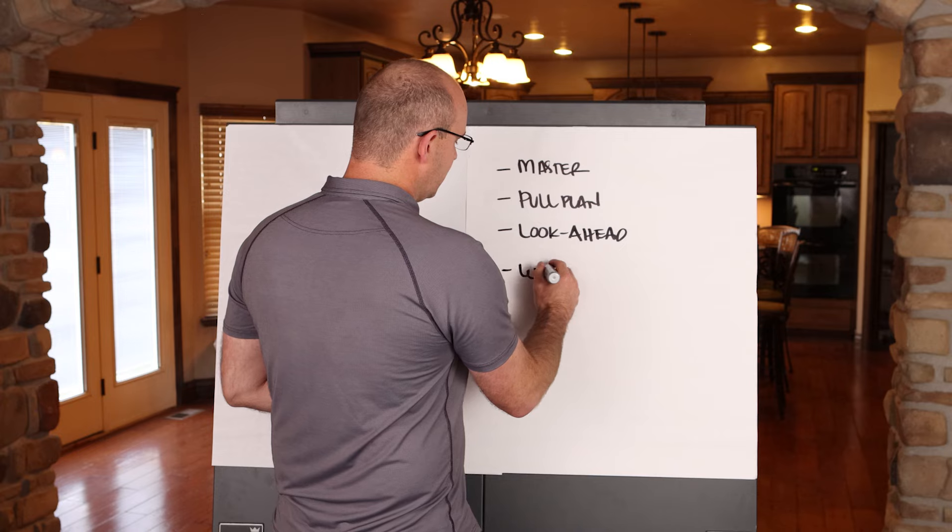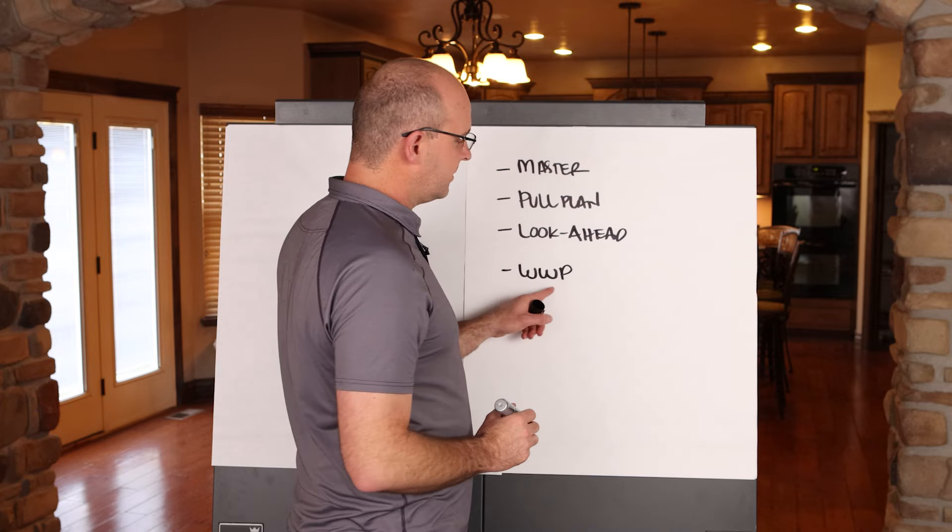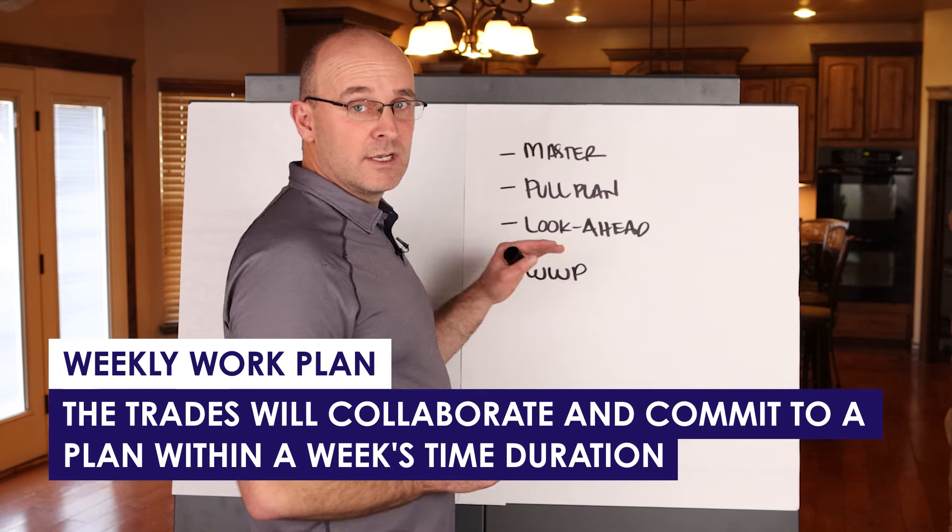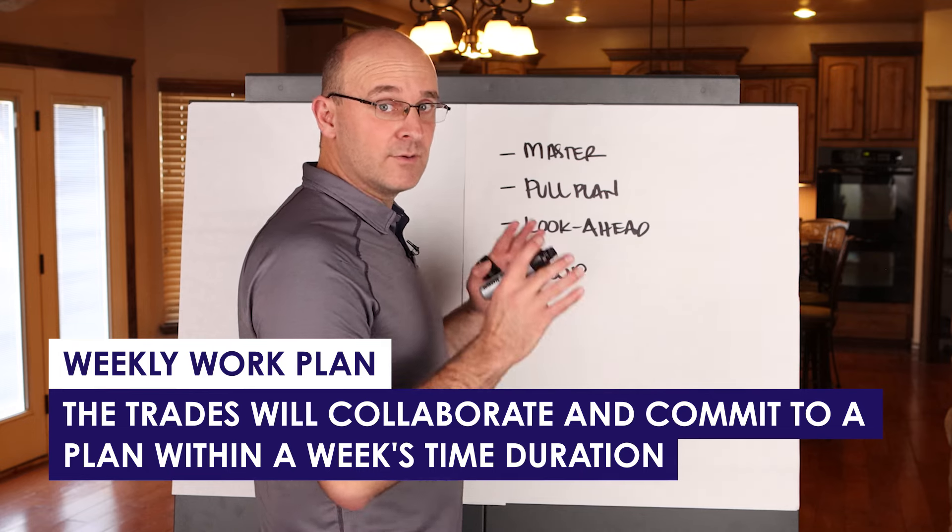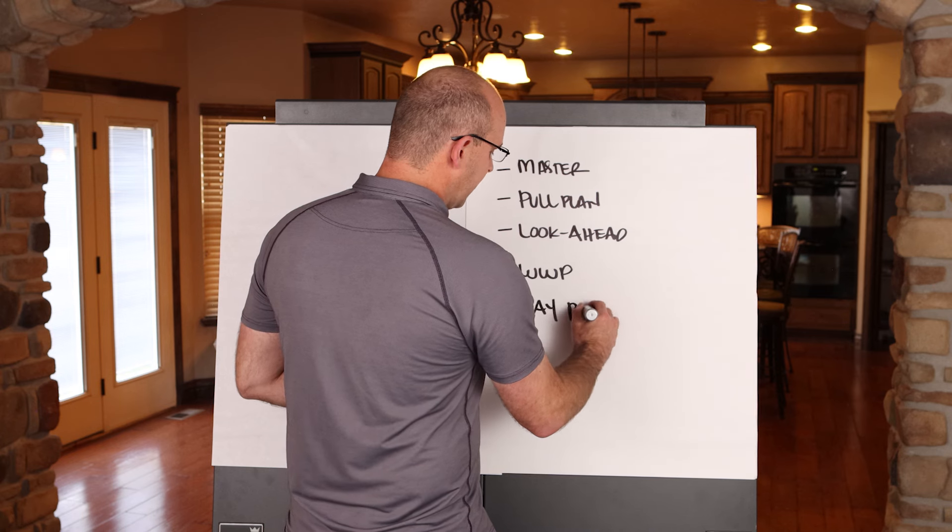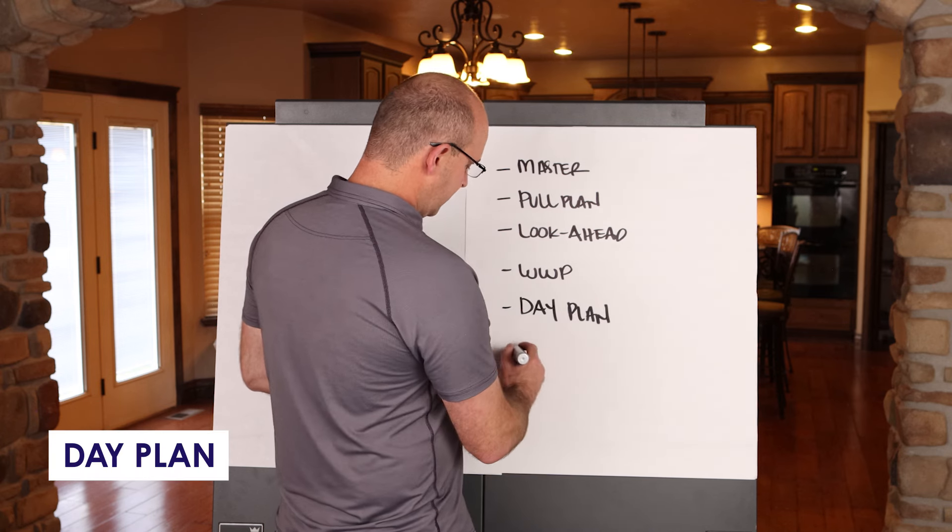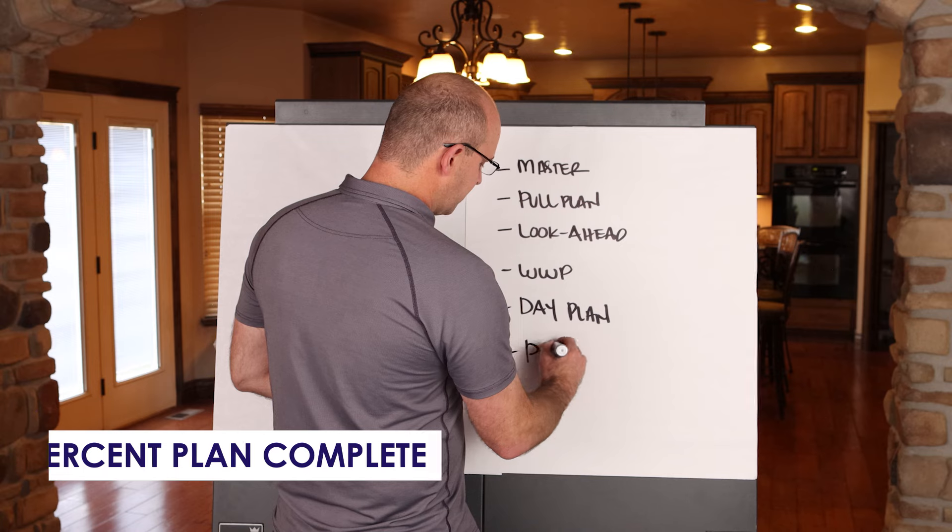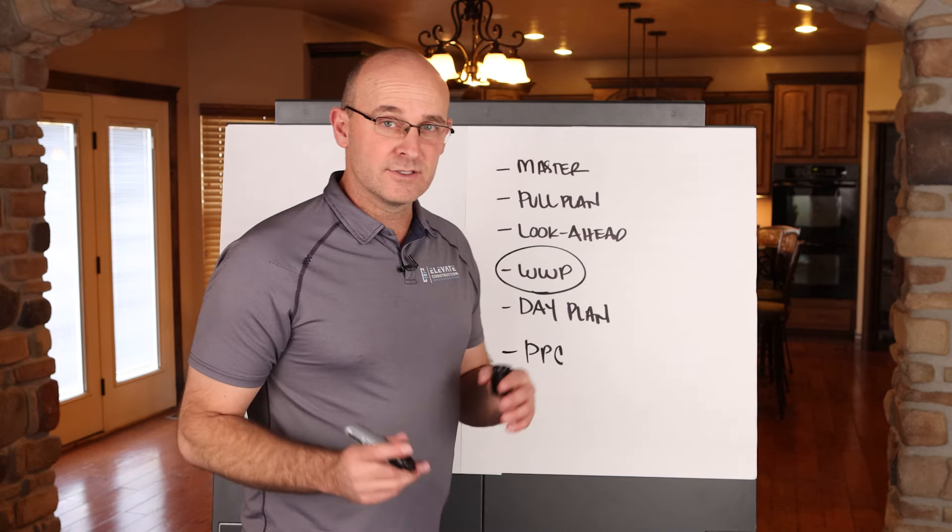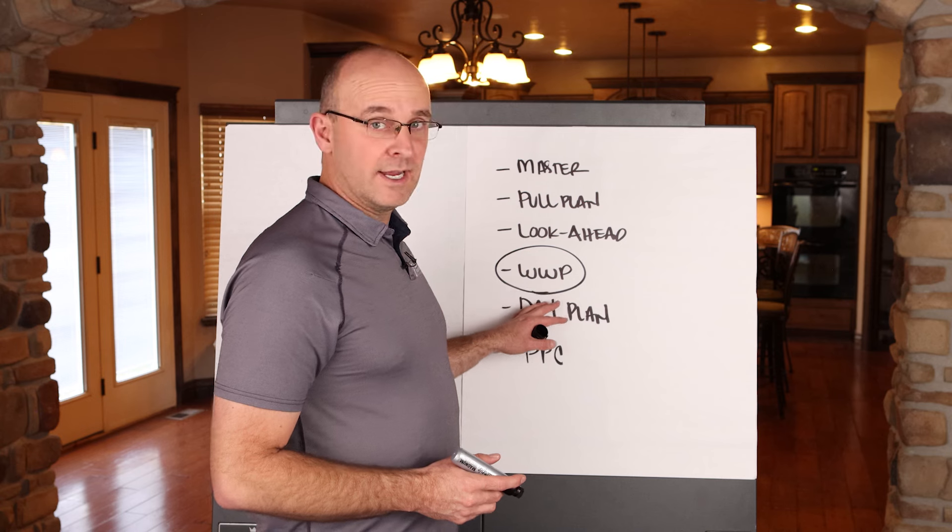And then there is the weekly work plan, which I'll do as WWP to get you used to it. This weekly work plan is where the trades will collaborate and commit to a plan within a week's time duration. And then we have a day plan, and that day plan is specifically for the day. And then we track percent plan complete. So what we're talking about in this video is the weekly work plan.